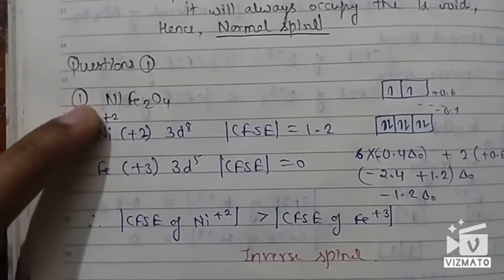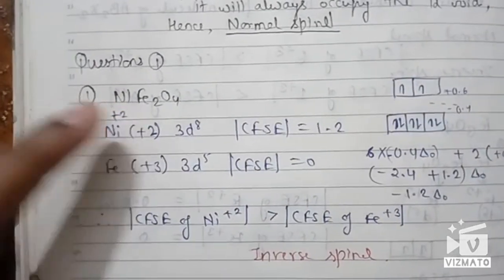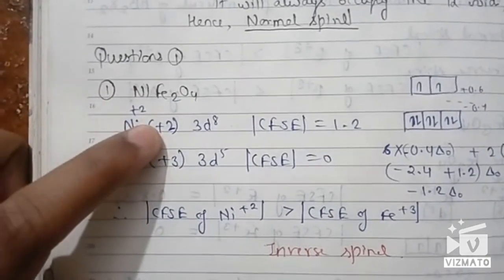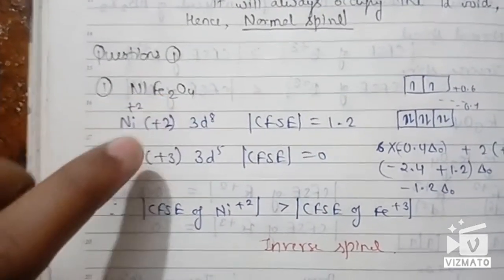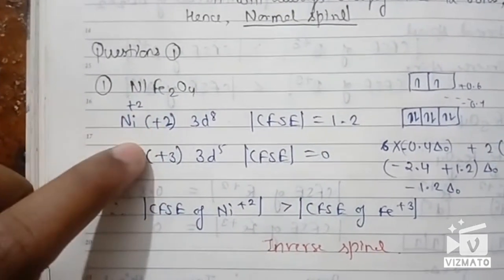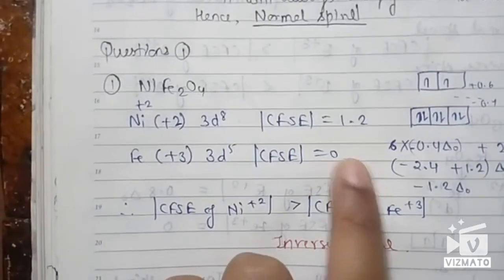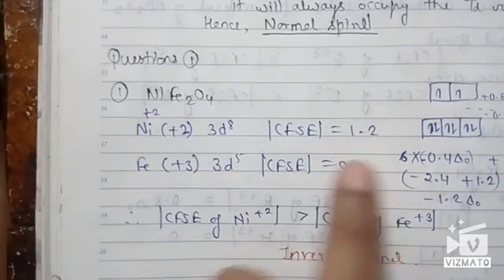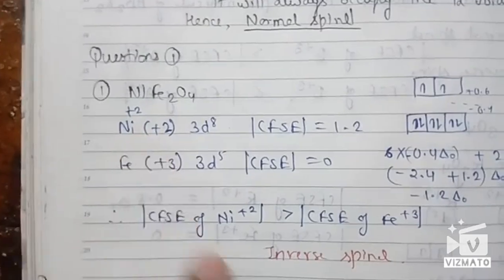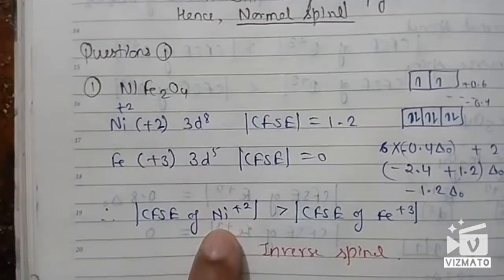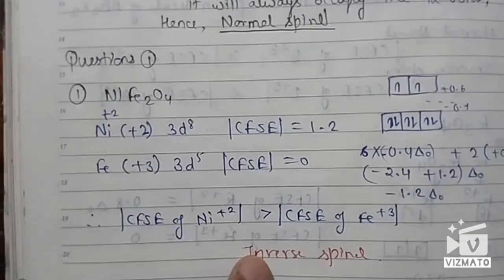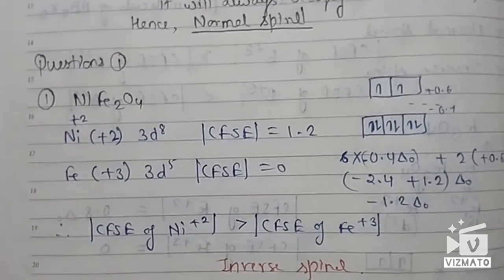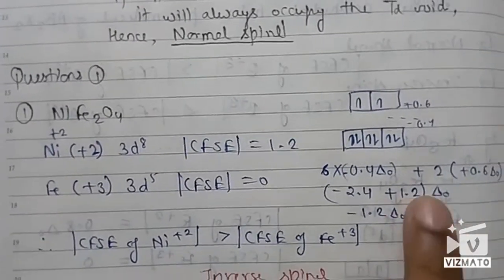The first question is about NiFe₂O₄. From this formula, Fe would be present in the +3 oxidation state and Ni in the +2 oxidation state. We calculate the CFSE and find that the |CFSE| for the +2 cation (Ni²⁺) is greater than that for the +3 cation. Therefore NiFe₂O₄ would be an inverse spinel.